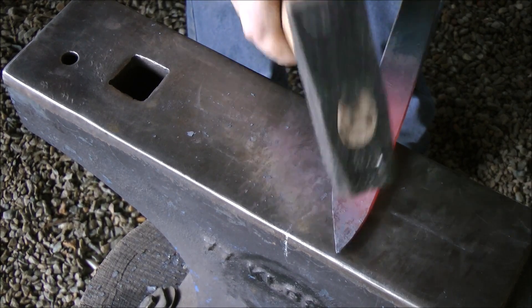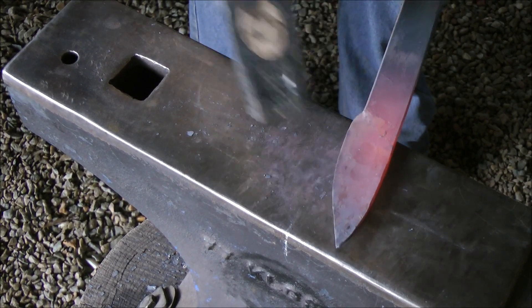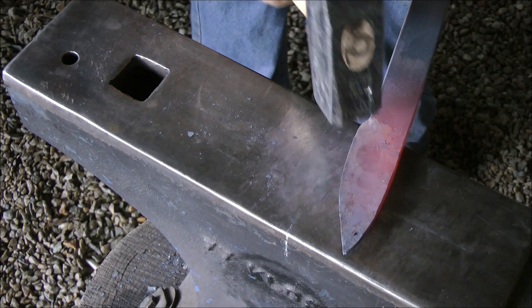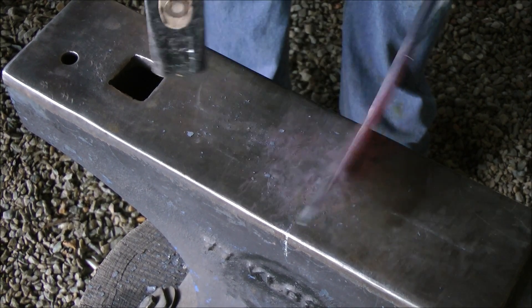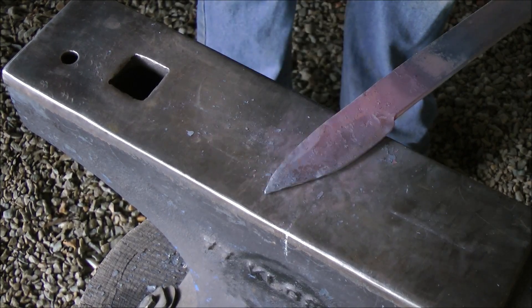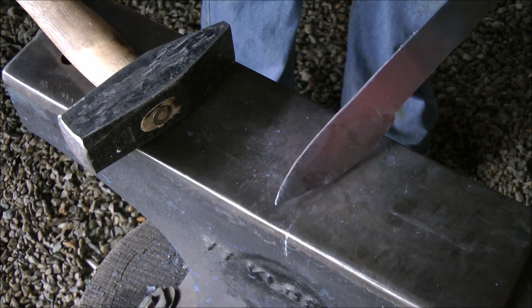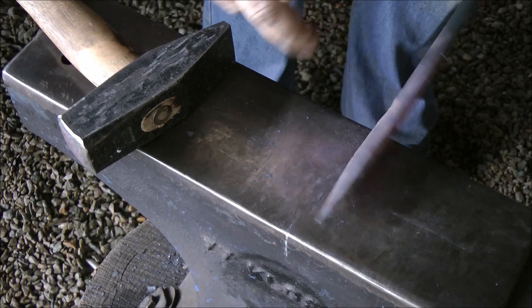Next heat up, you can see where my hammer blows are falling, I'm still working on the centre, flattening out. Metal is a little bit cold, so it's back into the forge. My next pass, I'm going to come up on the spine.